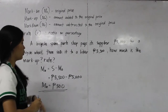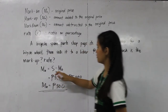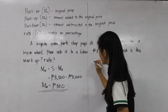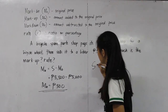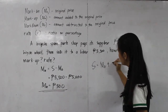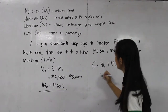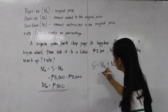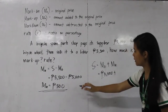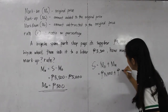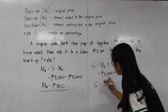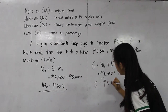What if we're going to find the selling price — what if in this problem the selling price is not given? The formula for selling price is original price plus markup. The original price in this problem is 5,000 pesos and our markup is 500 pesos, so our selling price is 5,500 pesos.